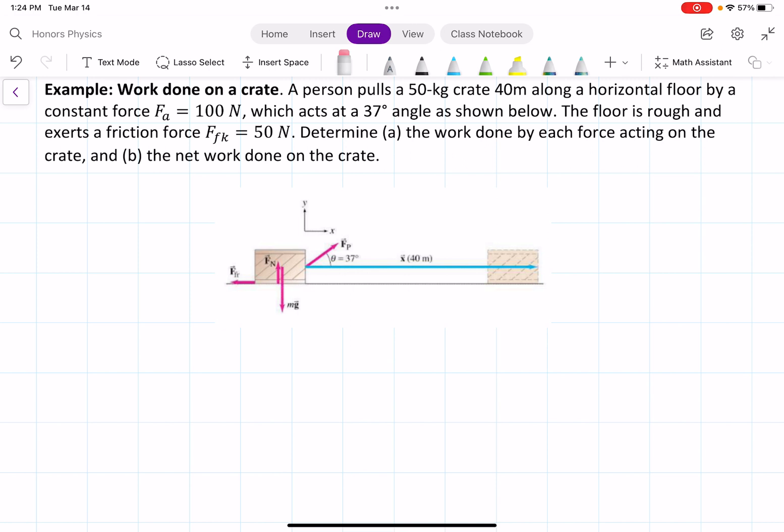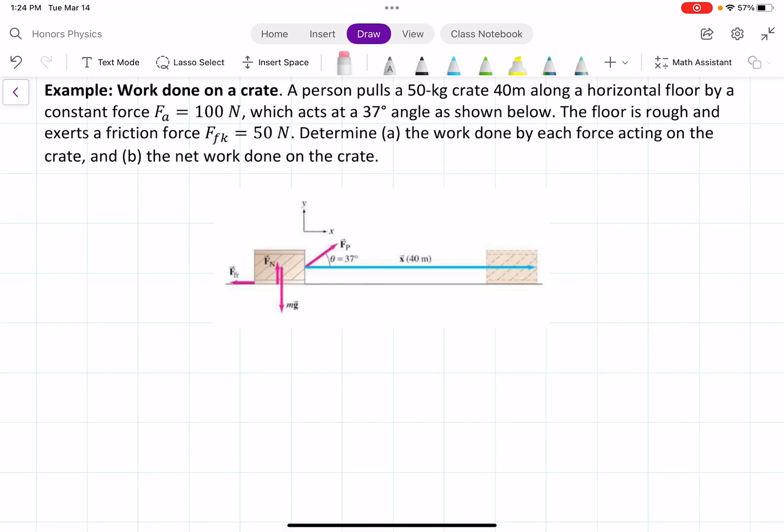So we can look at the work done from gravity. And we have W_g equals the force times the distance times the cosine theta. In this case, we have the force, which is Mg. The distance we have as the x value,